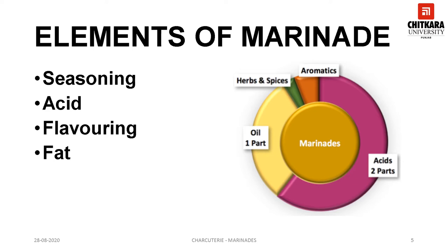The second element is an acid. This helps break down the protein and make your meat really tender. A whole range of acid products can be used in marinades. Citrus fruit, vinegars, lemon juice, yogurt, red and white wines are generally used.